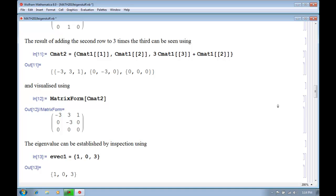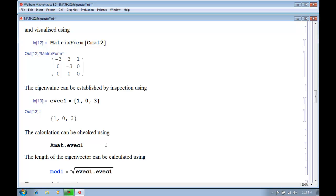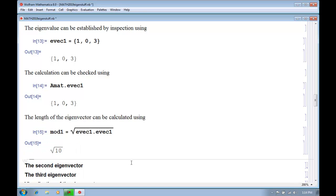And just to be on the safe side, we can check that it's an eigenvector by multiplying it by the matrix. And we can see that the result is the eigenvector. Well, for later reference, we need to calculate the length of this eigenvector, which is the square root of the scalar product of it with itself. So we do that. And it's the square root of 10.